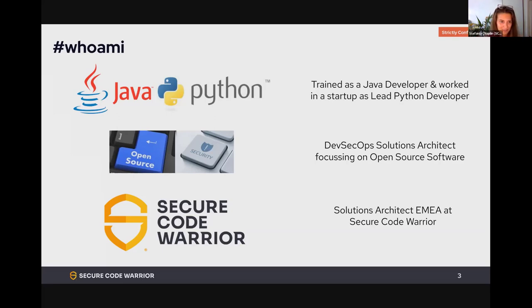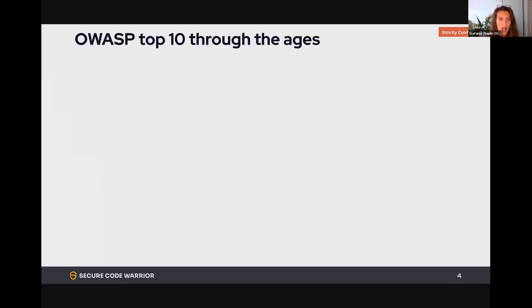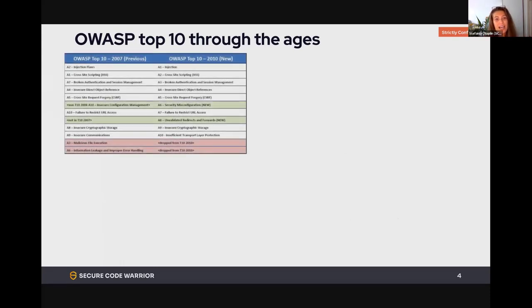So, the OWASP Top 10 through the ages. The first OWASP Top 10 was actually in 2003, but I'm starting with 2007. We can see some familiar vulnerabilities: injection flaws, cross-site scripting, authentication issues — these are vulnerabilities that keep popping up again and again.